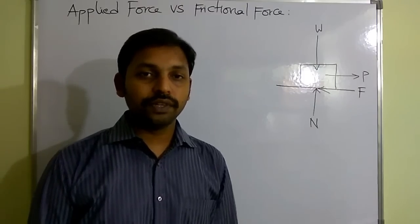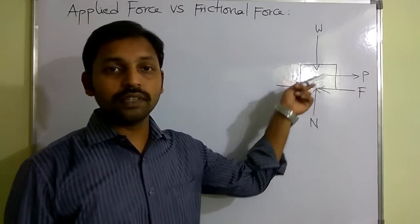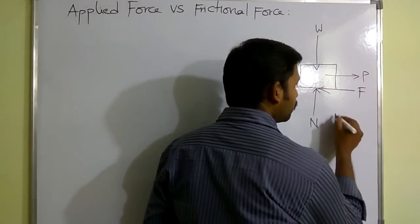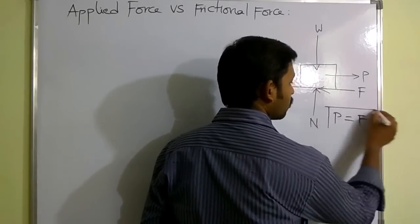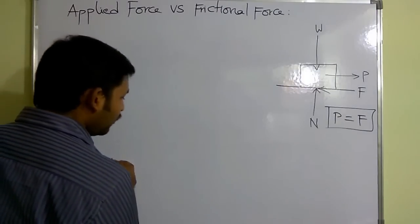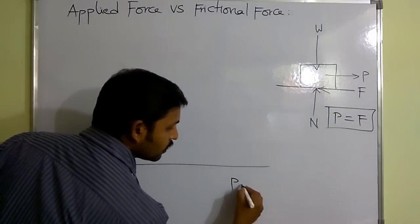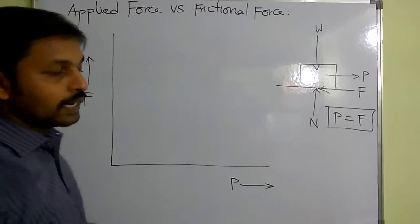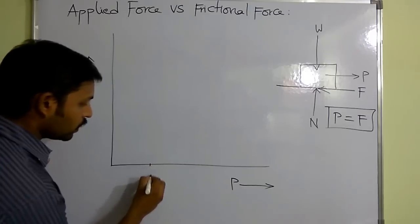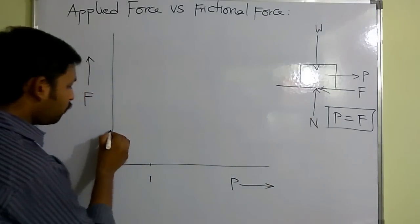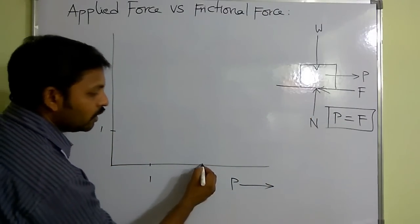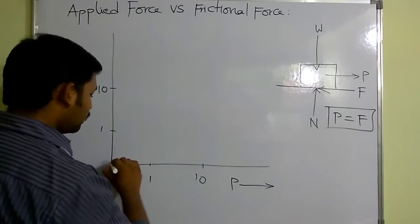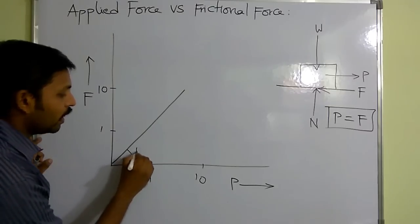Let's see the relation between applied force and frictional force. I have considered a wooden block on a horizontal surface. Taking applied force P on the x-axis and frictional force F on the y-axis: when applied force is 1 Newton, frictional force is also 1 Newton; when applied force is 10 Newton, frictional force is 10 Newton. Plotting different values gives a straight line inclined at 45 degrees, because the opposite and adjacent sides are equal.